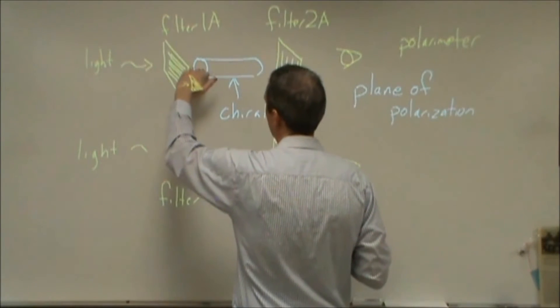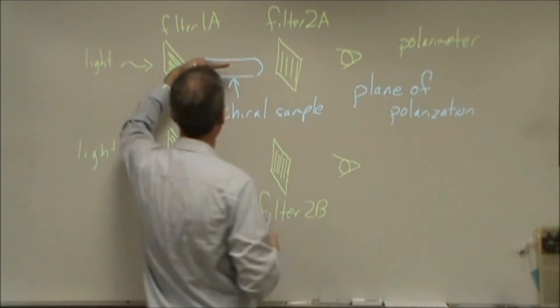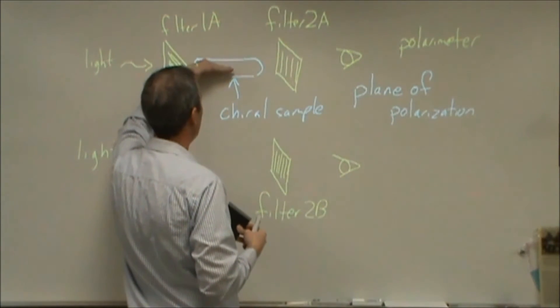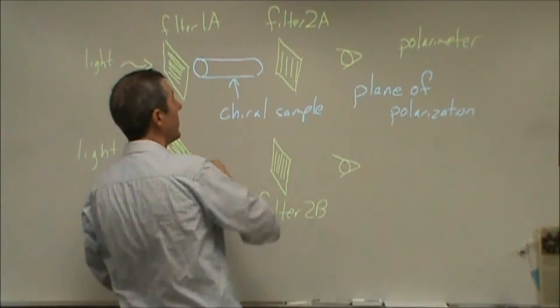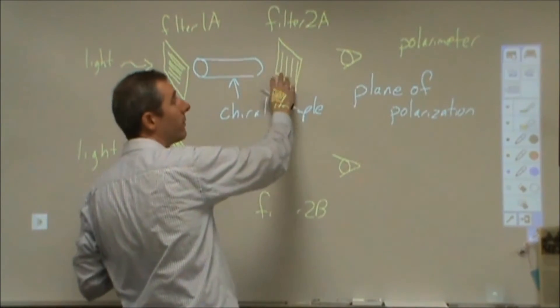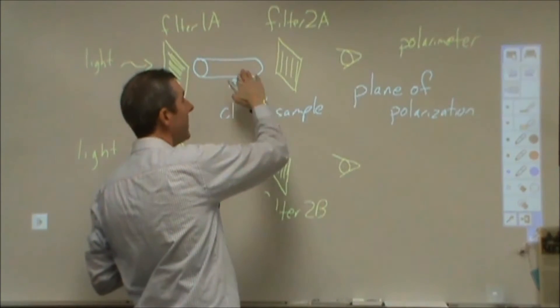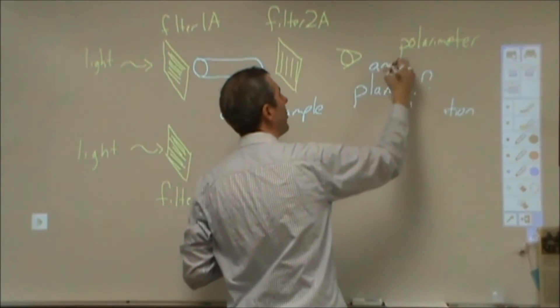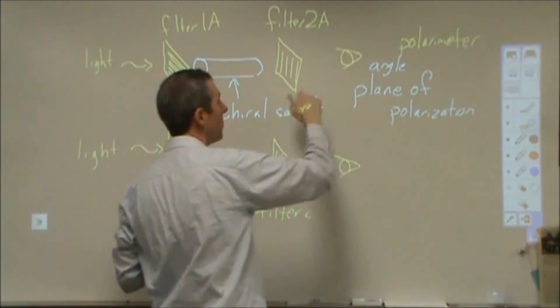What happens in here is that plane is going to start kind of going from this, and it's going to rotate a little bit. And so instead of meeting this polarizing filter where the polarized light is at 90 degrees, the angle of that plane of polarization has been rotated.